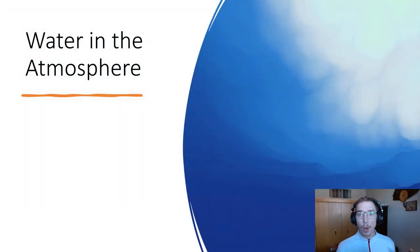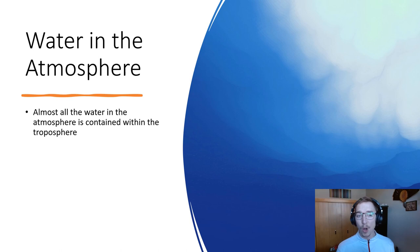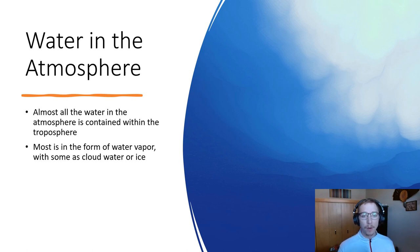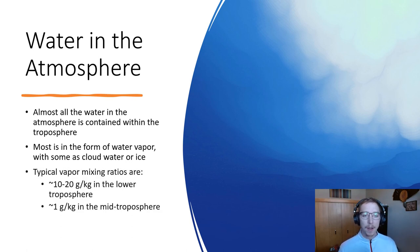So just as a quick recap, if we look at water in the atmosphere we know that almost all the water in the atmosphere is contained directly within the troposphere where we live. Most of it comes in the form of water vapor, some in the form of cloud water or ice. And then typical mixing ratios, which if we recall a mixing ratio is just a unit mass of water and a unit mass of dry air, around 10 to 20 grams per kilogram in the lower portions of the troposphere where we live.